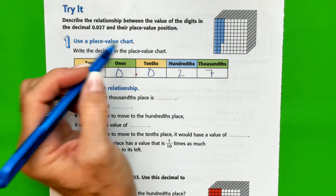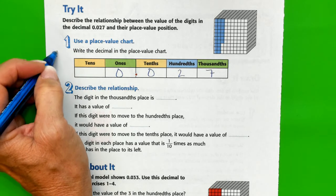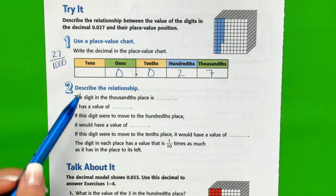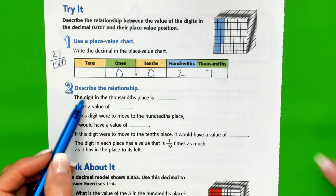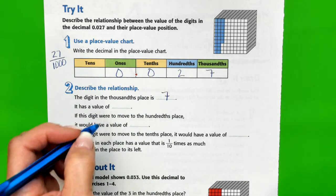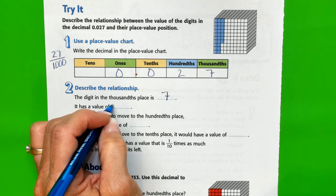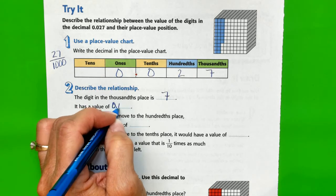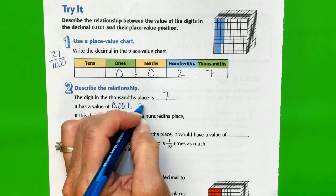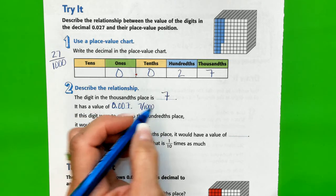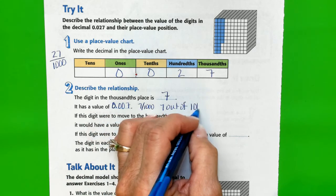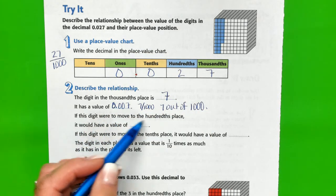If we were to write that as a fraction we would say 27 over a thousand - 27 out of a thousand are colored blue. The digit in the thousandths place is a seven. It has a value of 0.007 or seven thousandths. We could say seven out of one thousand.